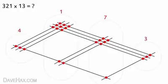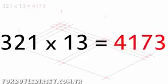4, 1, 7, 3. So our answer, 321 times 13, is 4,173.